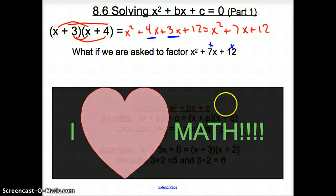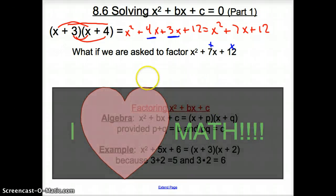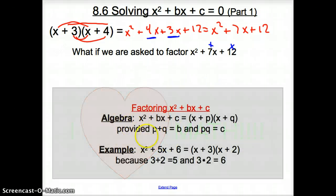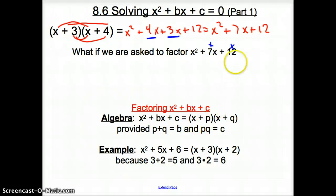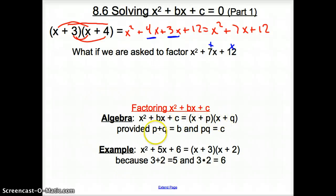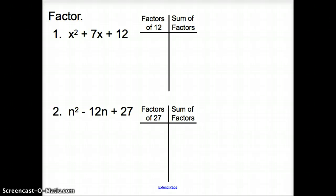Now I'm going to show you that mathematicians have found a way for this — just what we found up here, put into more letters. This states X squared plus BX plus C. If you let P and Q be different numbers, P and Q add up to B, but they multiply to C. The next example is just showing you the same thing with actual numbers.